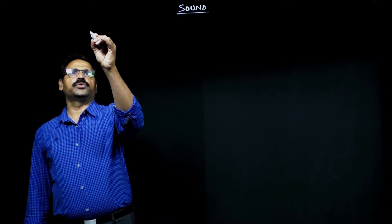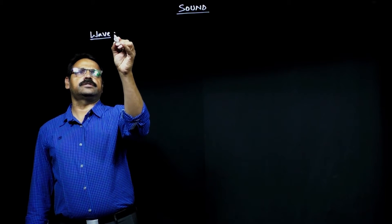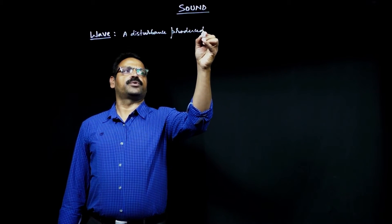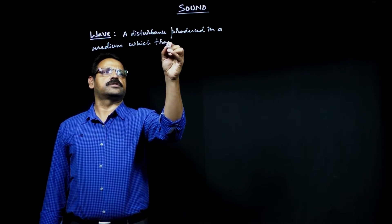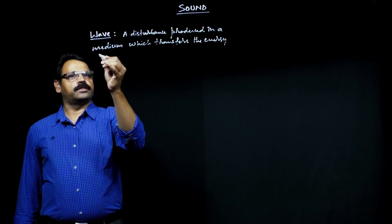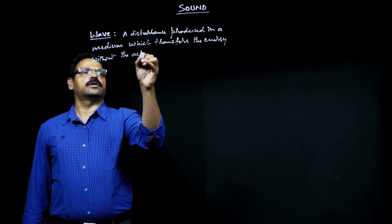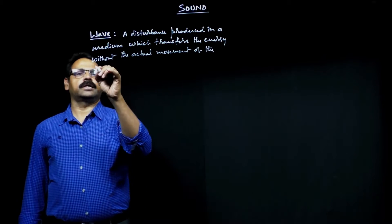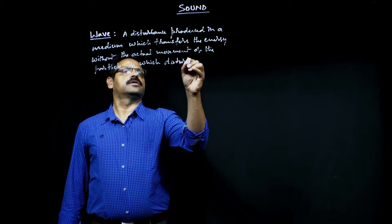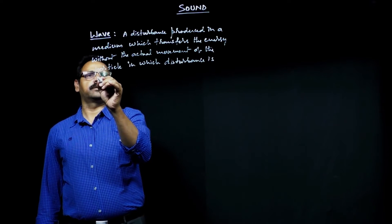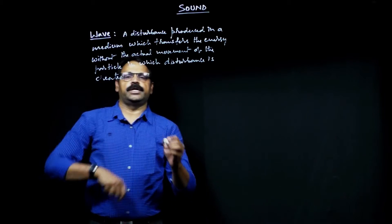First of all we should know what does it mean by a wave. A wave can be defined as a disturbance produced in a medium which transfers energy from one region to the other region without the actual movement of the particles in which the disturbance is created.